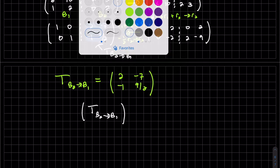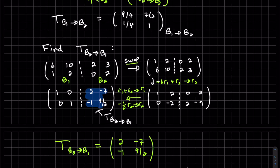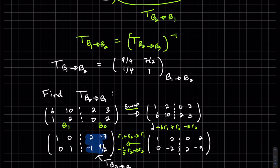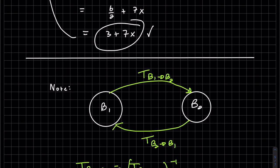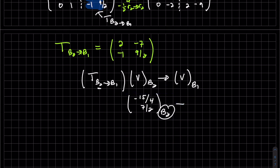So our formula, our transformation matrix times a vector from B2 right here. And we'll get a vector to B1. Since we just found a vector from B2 on our last example, we'll use that one. And our transformation matrix. Let's multiply that out.